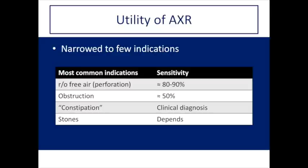The sensitivity of abdominal x-ray in certain clinical situations: for ruling out free air in the setting of perforation, the abdominal x-ray is actually quite sensitive, but it's not 100% sensitive. In cases of suspected obstruction, the abdominal x-ray is actually not that sensitive — it's about 50% sensitive for small bowel obstruction. There are some relatively specific signs for small bowel obstruction, but if the bowel gas pattern is nonspecific or bowel loops are filled with fluid, you can't really exclude small bowel obstruction.